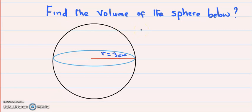We are given the radius of the sphere as 3 cm. One thing to remember is the volume of a sphere is always equal to 4/3 π r³.